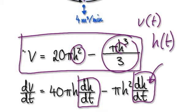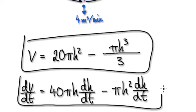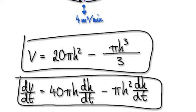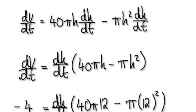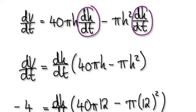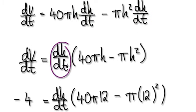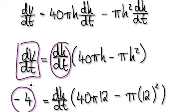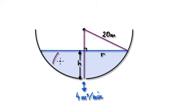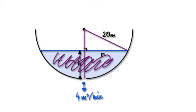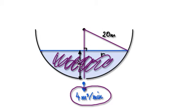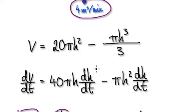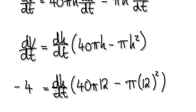So from here, that takes us to the next stage — tidy up, and we're trying to get dh/dt on its own, so factorize dh/dt. That gives us the factorized form. Remember, dv/dt is negative 4, because we are thinking in terms of the volume of water. As the water is draining away, we are losing volume — that's why dv/dt is negative 4.